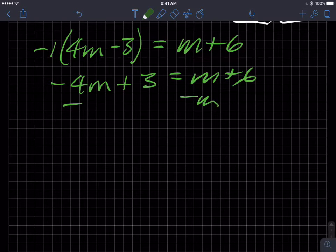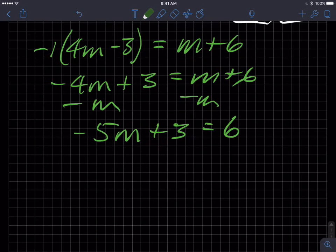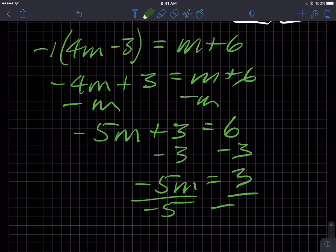So it equals m plus 6. Subtract m from both sides, and I get negative 5m, so that makes our equation quite a bit different than the other version. Subtract 3 from both sides, and I get 3, and then divide both sides by negative 5, and I get m equals negative 3 fifths. And so that's the quick, maybe not quick enough, but quick review of absolute value, absolute value equations.